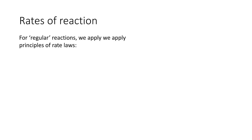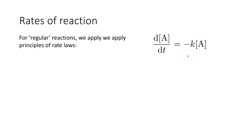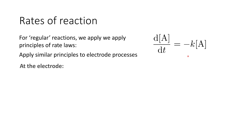Fundamentally in chemistry, we want to consider rates of reaction. When we think of regular reactions, we apply the principles of rate laws. We're familiar with forming a rate equation such as this: the rate of change of the concentration of A with respect to time is equal to the negative of the rate constant times the concentration — this is for a first-order process. We can apply similar principles to electrode processes.